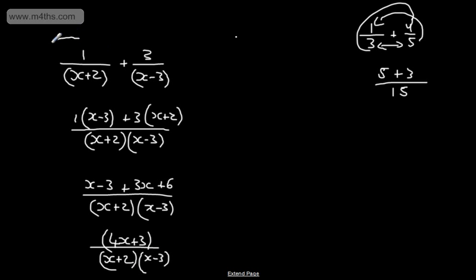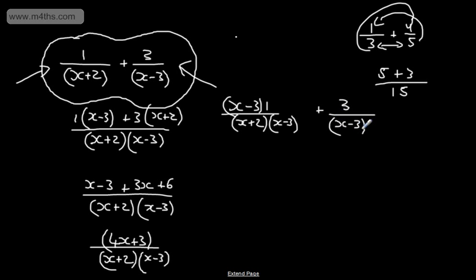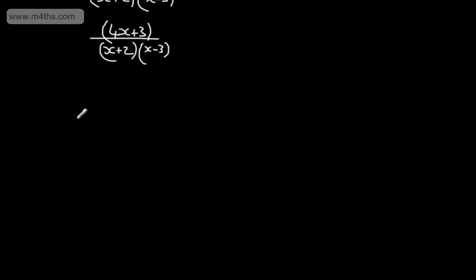An alternative way — instead of cross-multiplying — is to write equivalent fractions. Knowing the common denominator is the product of the two, multiply the first fraction top and bottom by (x minus 3), and multiply the second fraction top and bottom by (x plus 2). Either approach works; for more complex problems I prefer the cross-multiplication method. The technique is the same whether combining or substituting.